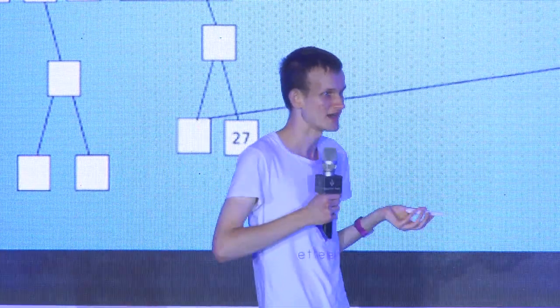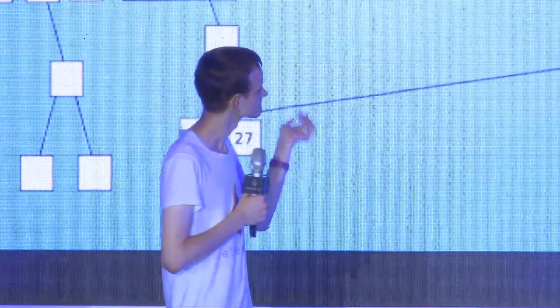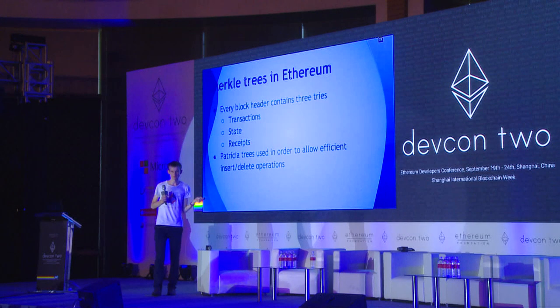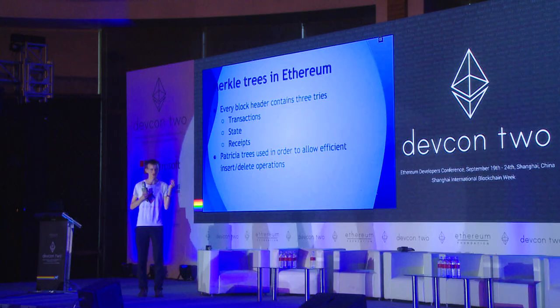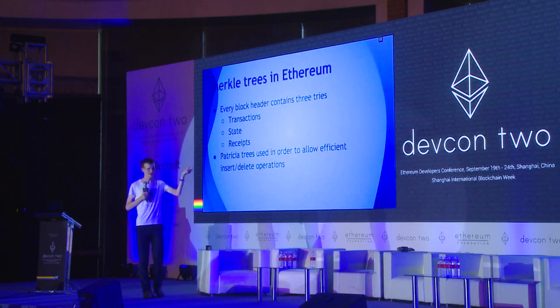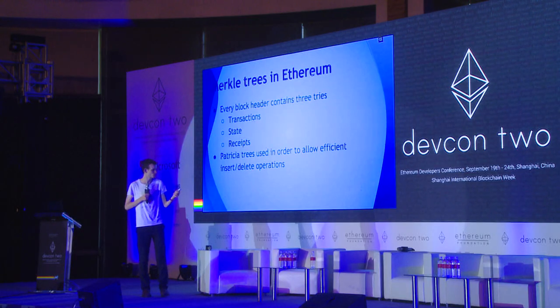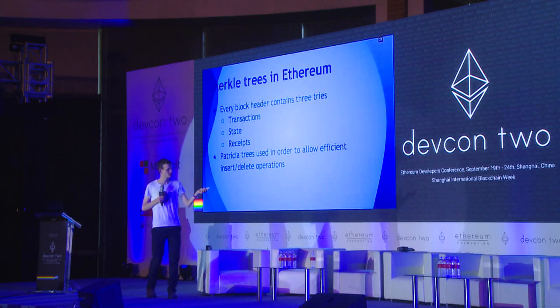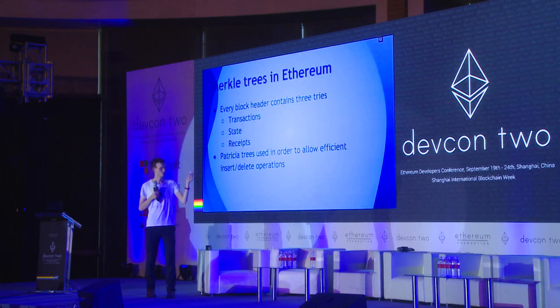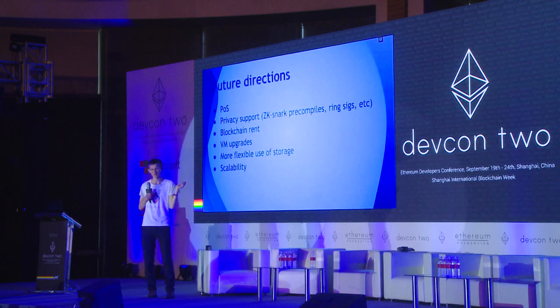If a node gives you a Merkle proof saying this particular key in this particular account is 45, and you can verify the proof of work and the hashes, then you can verify — unless all the miners are conspiring to screw you over — that this actually is the state of the blockchain at that time. There was a test of an alpha lite client released a couple of weeks ago. It works great. Bitcoin uses Merkle trees just for transactions, but we use Merkle trees for transactions, state (account balances, contract code, contract storage), and receipts. We use Patricia trees which allow you to update the tree very efficiently.